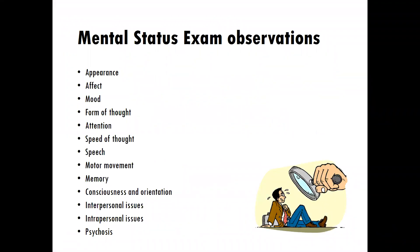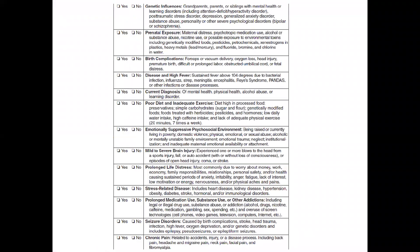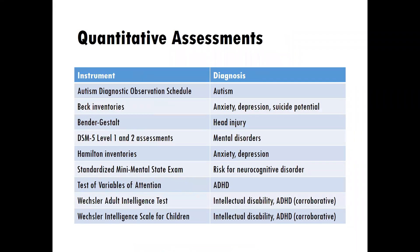We'll begin by actually learning about some non-technology-based methods of assessment. We'll review quickly the mental status exam. We'll also review some important information about risk factors for neurocognitive dysregulation. And then we'll look at other quantitative assessments that are typically used when conducting a counseling assessment, especially when looking at more neurological functioning.